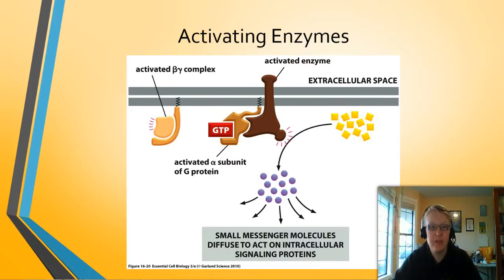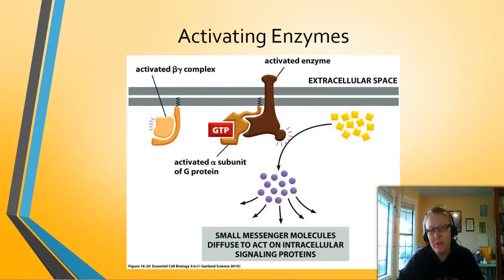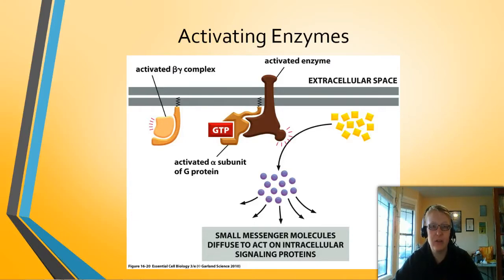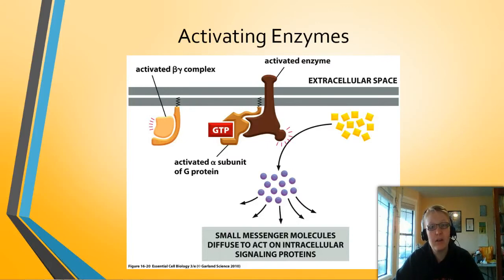Here's another example where the alpha subunit does the activating — in this case, activating an enzyme. The GPCR receives the signal and passes it across the membrane to the G-proteins. The alpha subunit becomes active, and the beta-gamma subunit is activated as well. Alpha travels to an enzyme and activates it, and that enzyme creates more secondary messengers. These secondary messengers go on to act on intracellular proteins in a variety of ways, depending on what they are.